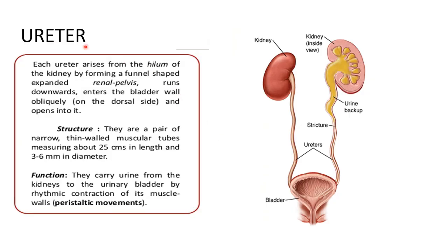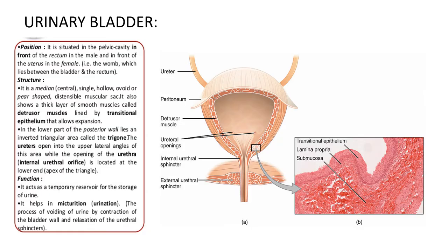The kidney opens into the ureter. Each ureter arises from the hilum of the kidney, forming a funnel-shaped expanded renal pelvis, and enters the bladder obliquely. Its main function is to carry urine from the kidney to the bladder by peristaltic movement. It is 25 cm long, 2 to 3 mm in diameter, and is a thin muscular tube-like structure.